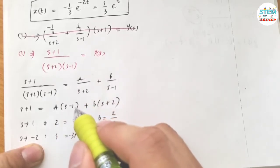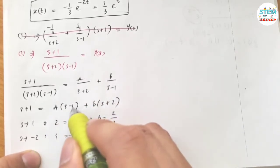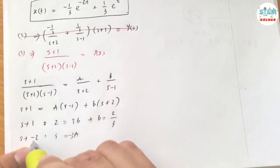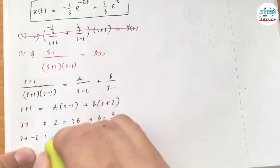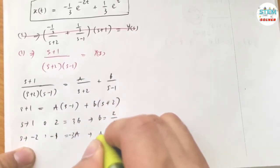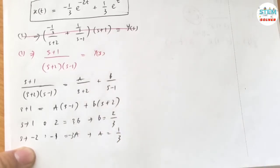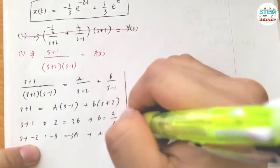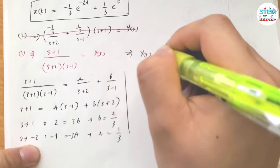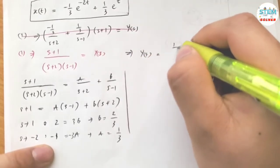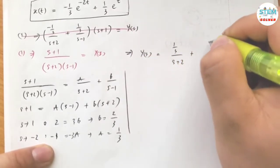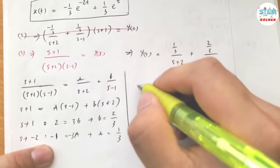Let s equal 1. On the left side I have 2. On the right side I have 3b. On the right side it eliminates this, so I have negative 3a. Negative 2 minus 1, negative 3a. And on the left side I have negative 2 plus 1, negative 1. So a equals 1 third. Then y of s equals 1 third over s plus 2 plus 2 thirds over s minus 1.